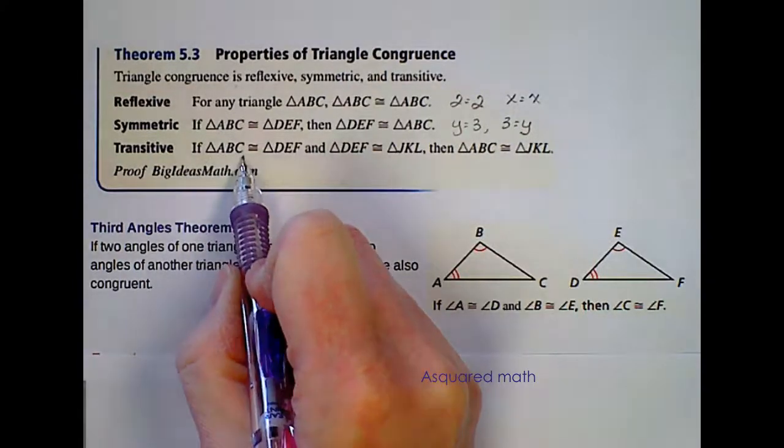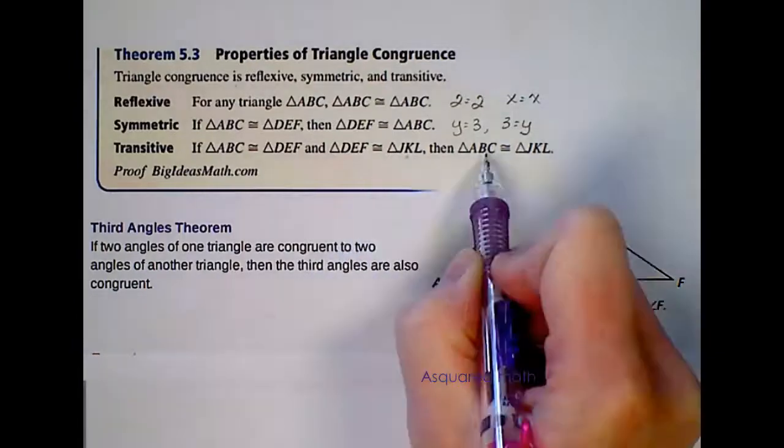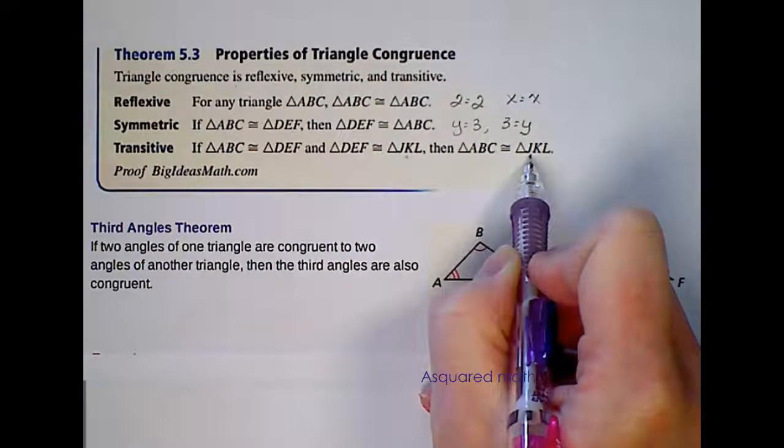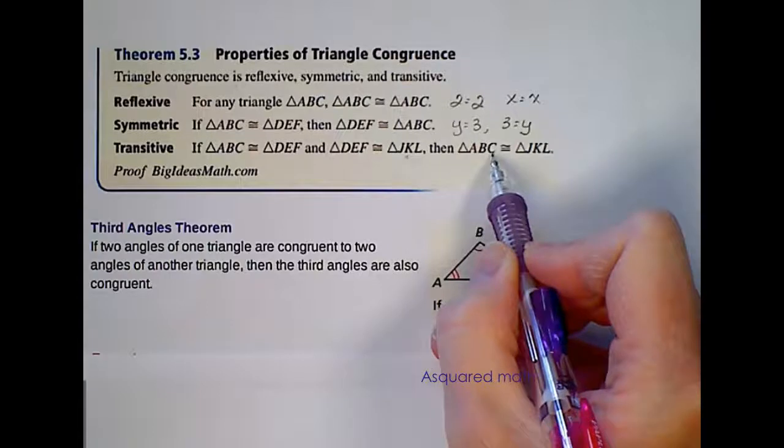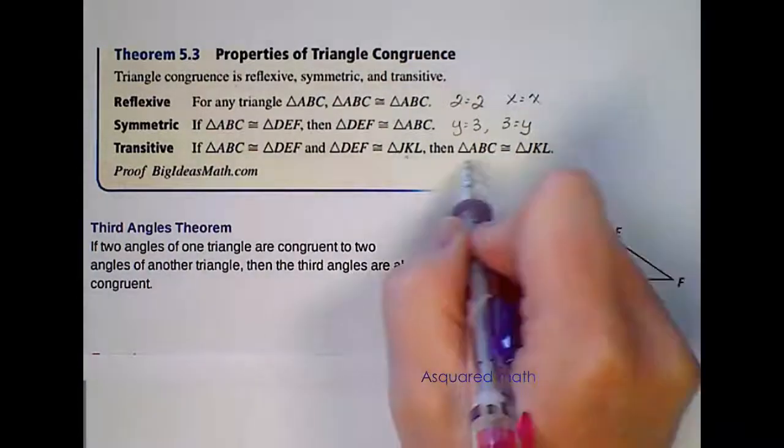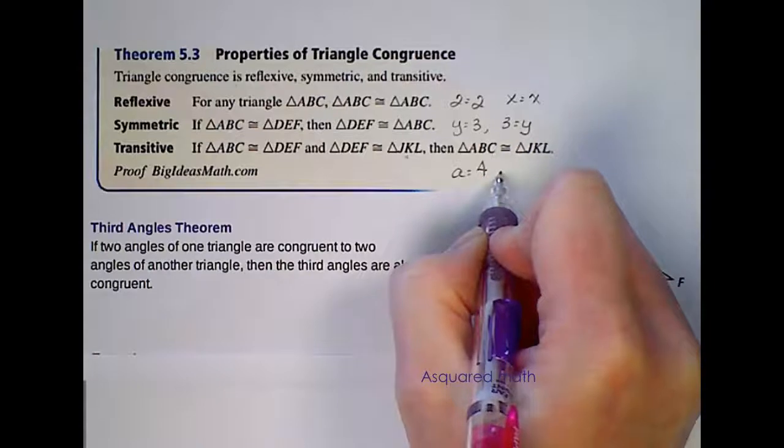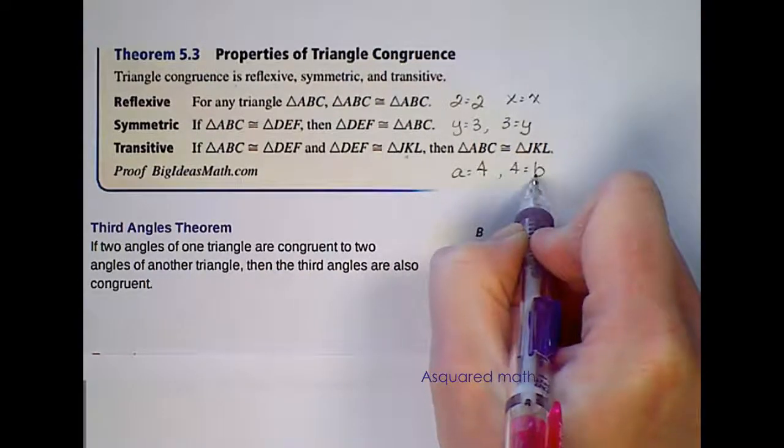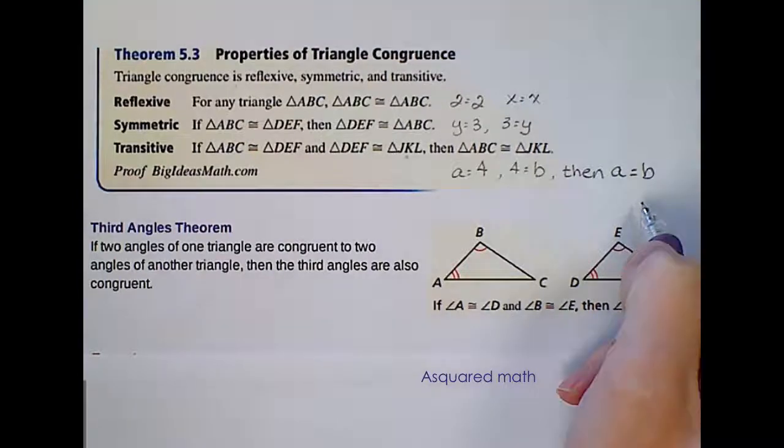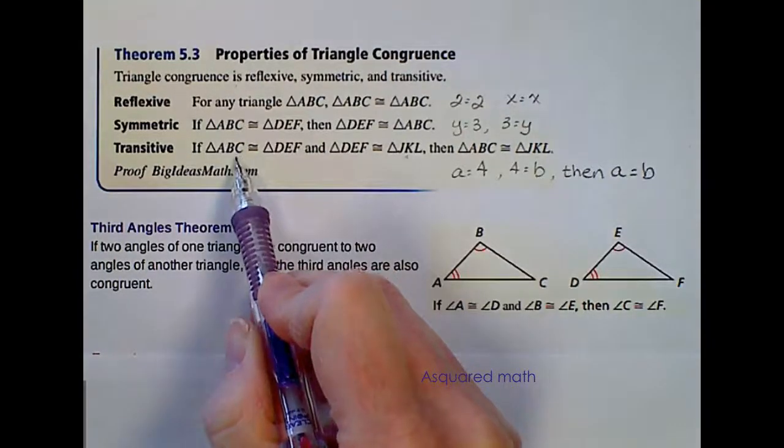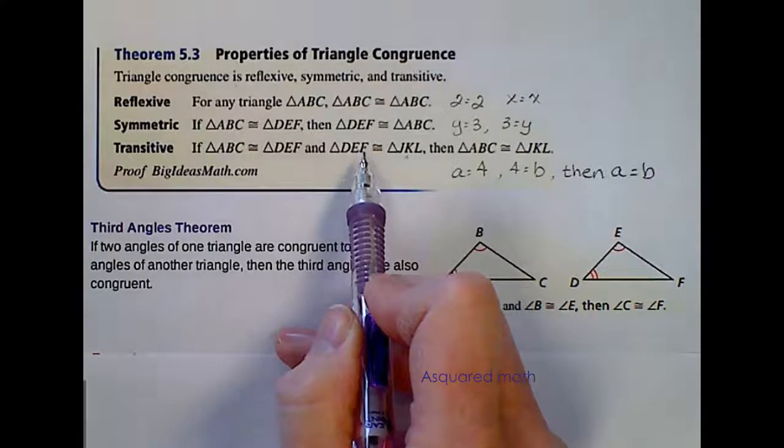Transitive. If triangle ABC is congruent to triangle DEF and DEF is congruent to JKL, then triangle ABC is congruent to triangle JKL. Now this one's really complicated because there's a lot of letters going on. But if we break it down to something you're more familiar with in the algebra world, if we said that A equals 4 and 4 equals B, then we can say that A equals B. So this is saying if one triangle is congruent to another and that triangle is congruent to a third one, then the first triangle has to be congruent to that third triangle as well.